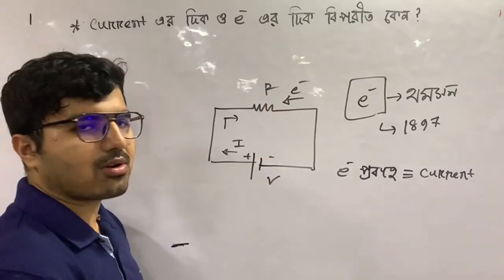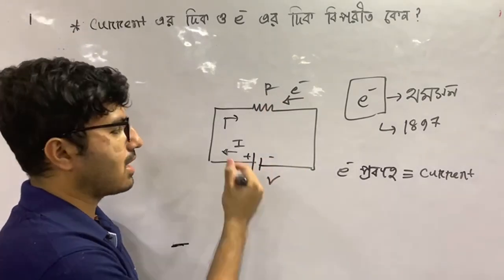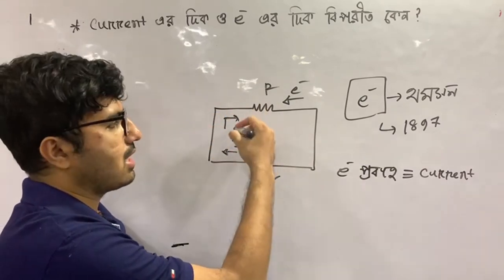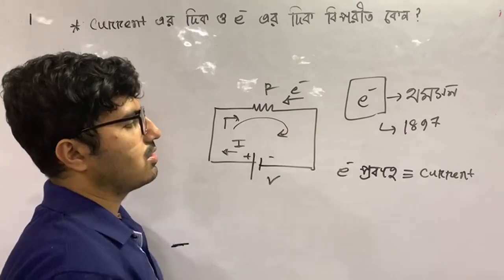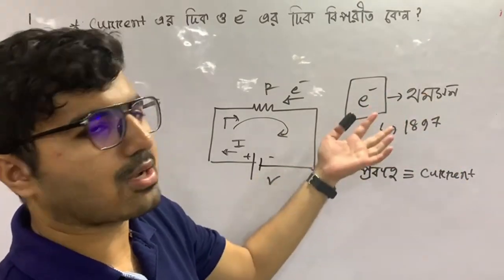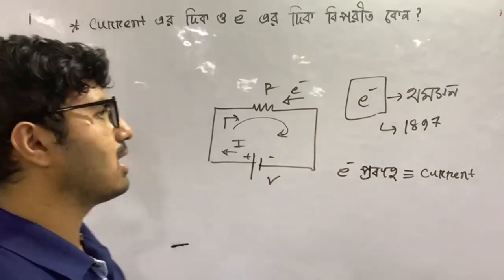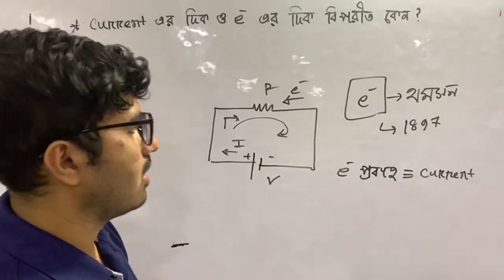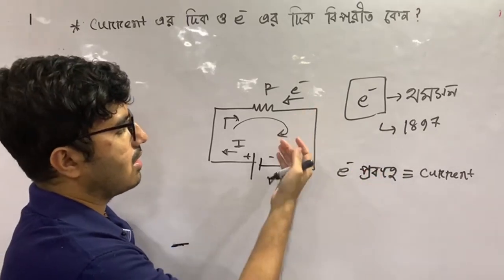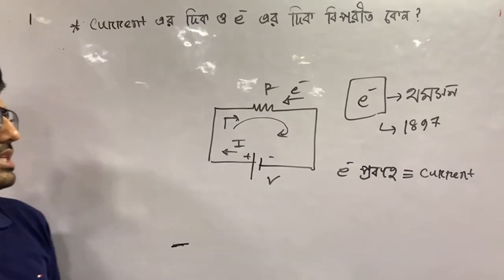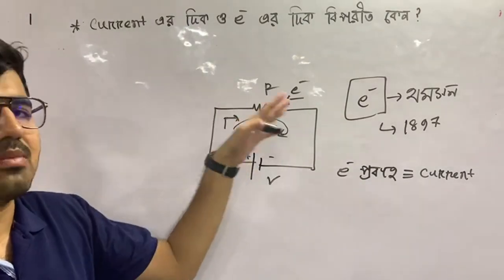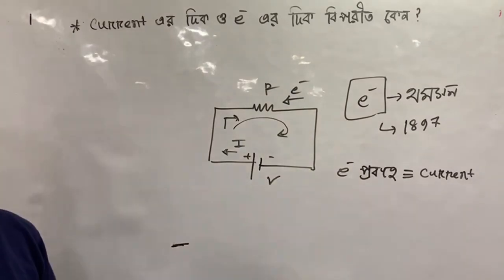If the current is present, the battery is less than the current. On the higher level, the exchange happens with a command.